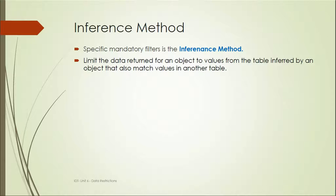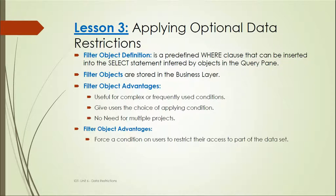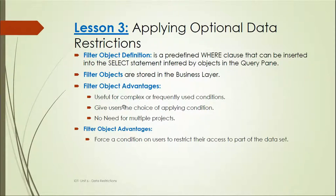Coming to applying optional data restrictions: we have filter object definition, which is a predefined WHERE clause that can be inserted into the SELECT statement as inferred by objects in the query pane. When developing a report in Web Intelligence Rich Client, we can have objects in the query filter pane. Filter objects are stored in the business layer — we can create filter objects there, similar to dimensions and measures, but they are condition statements.